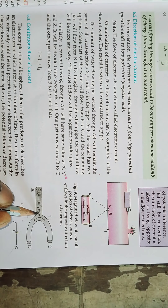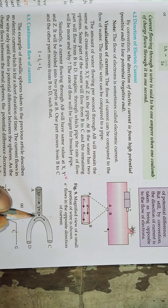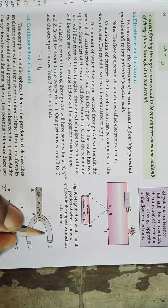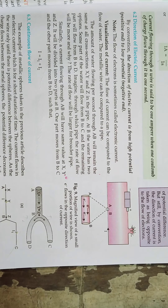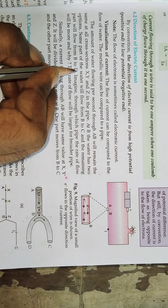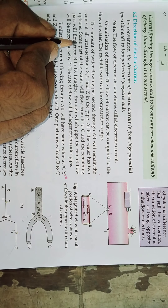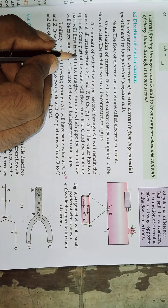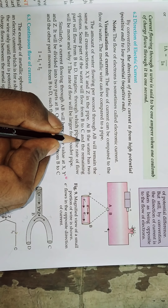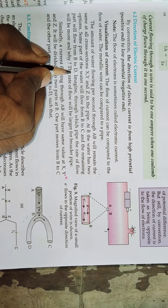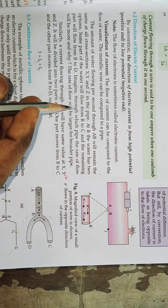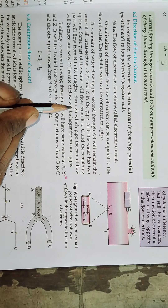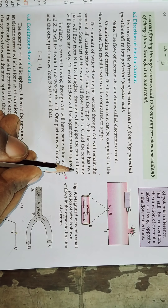The amount of water flowing per second through A-B will remain the same at all cross-sections — x, y, and z — in the pipe. The water flow per second through A-B is the same at all cross-sections x, y, z.